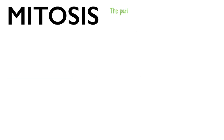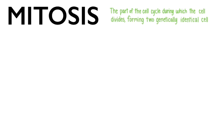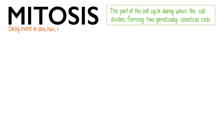Mitosis is the part of the cell cycle during which the cell divides, forming two genetically identical cells. Mitosis is a daily event in skin, hair, and mucous membranes.